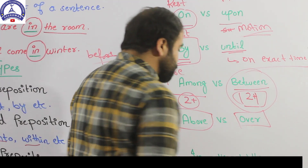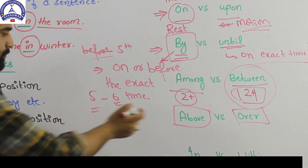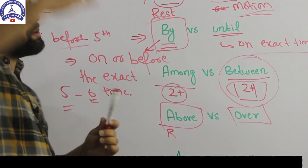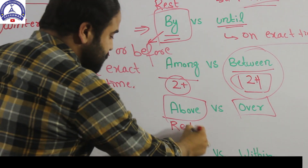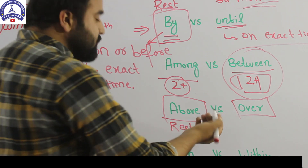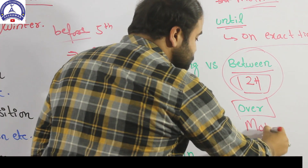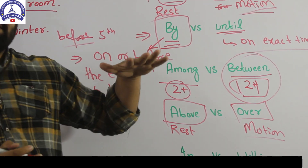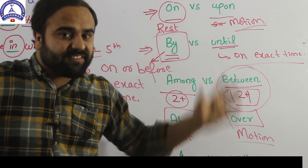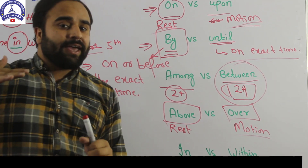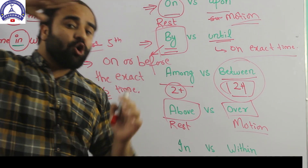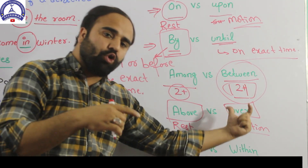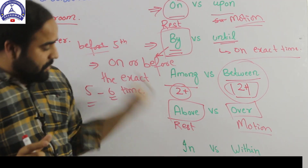Above versus over — very easy. When something is higher than us and it is at rest, we use 'above'. When something is in an upper position and in motion, we use 'over'. For example, 'the sky is above us' because the sky is at rest. And 'the airplane is flying over the mountains' — the airplane is in motion, so we use 'over'.